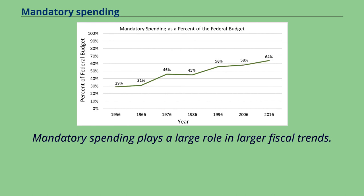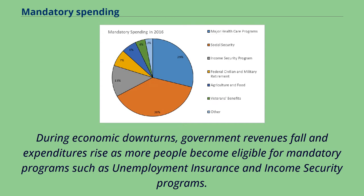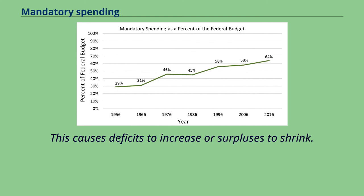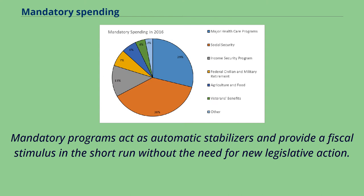Mandatory spending plays a large role in larger fiscal trends. During economic downturns, government revenues fall and expenditures rise as more people become eligible for mandatory programs such as unemployment insurance and income security programs. This causes deficits to increase or surpluses to shrink. Mandatory programs act as automatic stabilizers and provide a fiscal stimulus in the short run without the need for new legislative action.